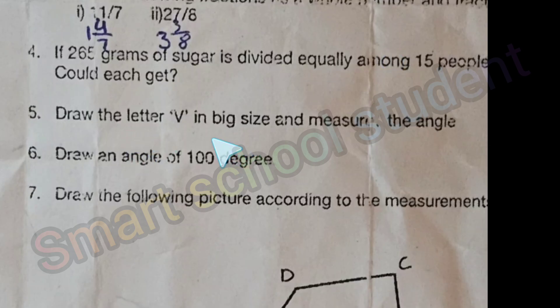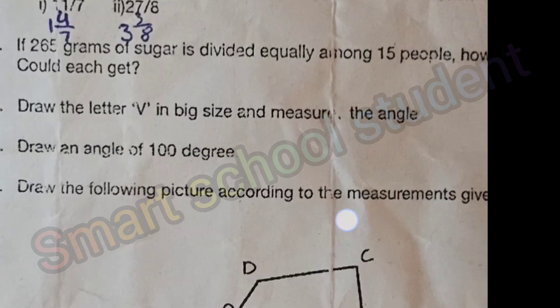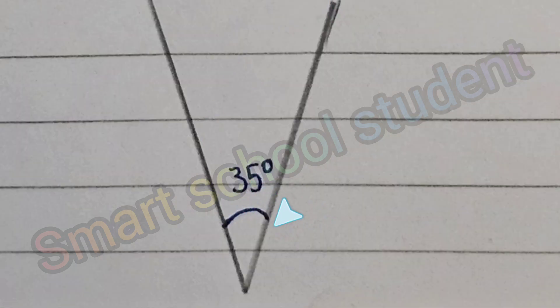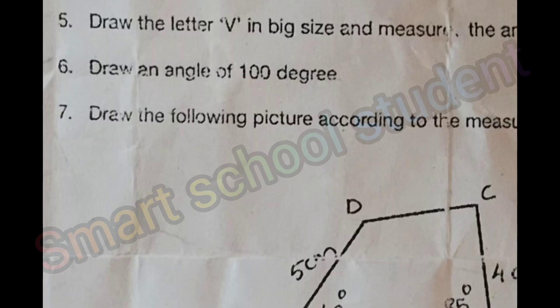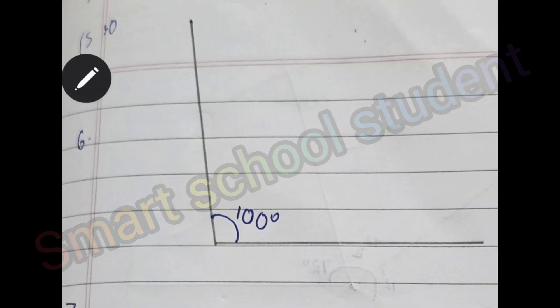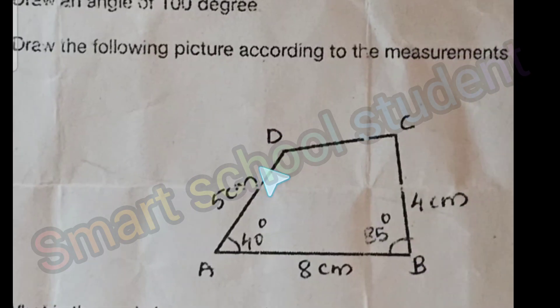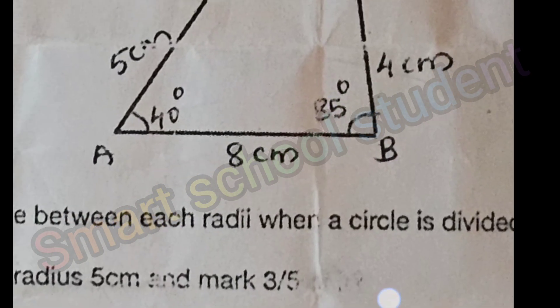Fifth question, draw the letter V in big size and measure the angle. Draw and measure the angle in terms of the two arms width and angle. Here it is 35 degrees. Next question is question 6, draw an angle of 100 degrees using pencil and protractor. Draw 90 degrees and correct perpendicular, this is 100 degrees.